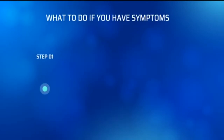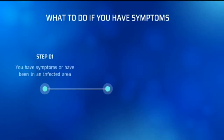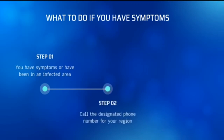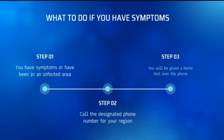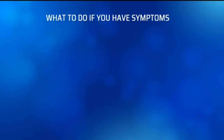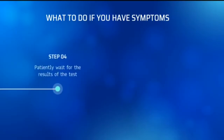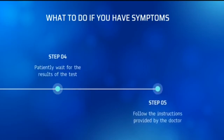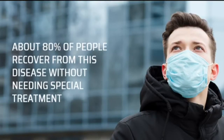What to do if you have symptoms? Step 1: You have the symptoms or have been in an infected area. Step 2: Call the designated phone number for your region. Step 3: You will be given a home test over the phone. Step 4: Patiently wait for the results of the test. Step 5: Follow the instructions provided by the doctor. About 80% of people recover from this disease without needing special treatment.